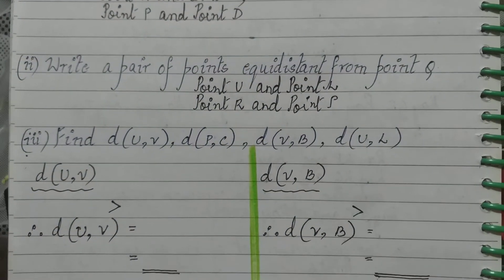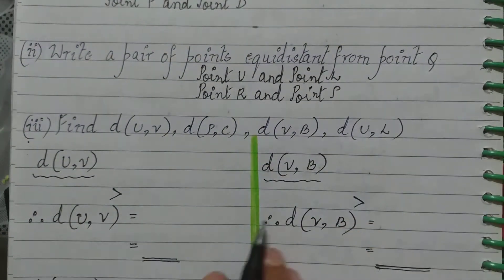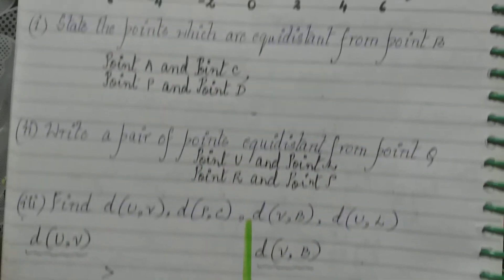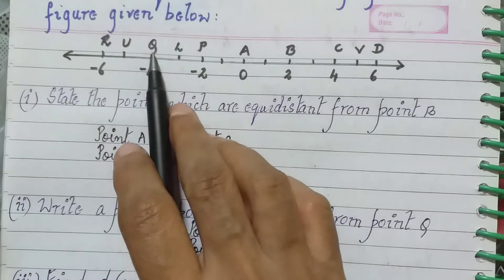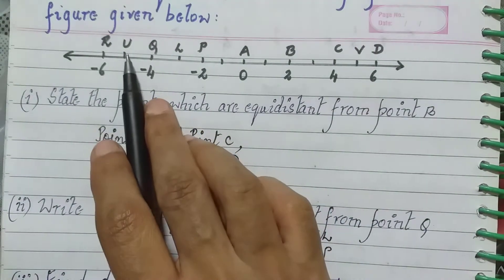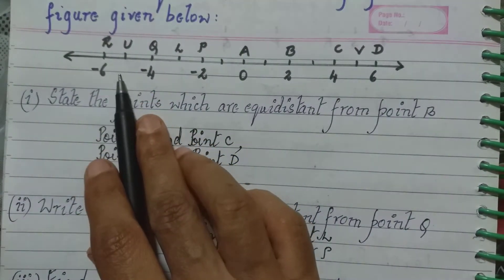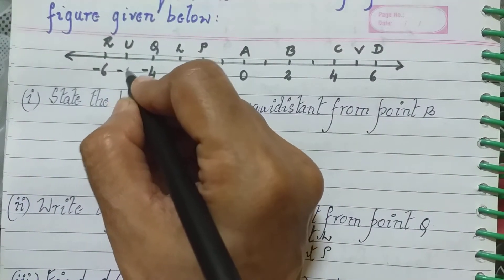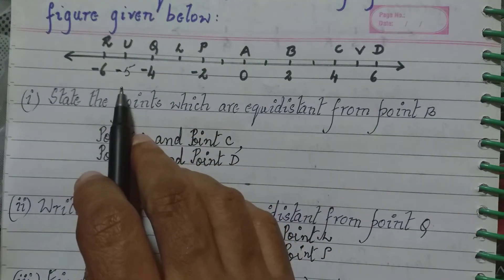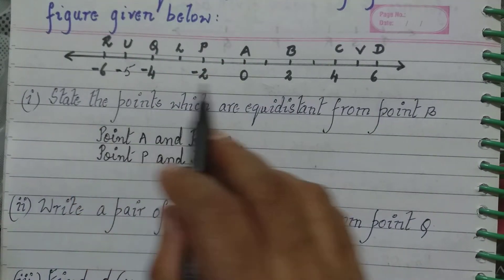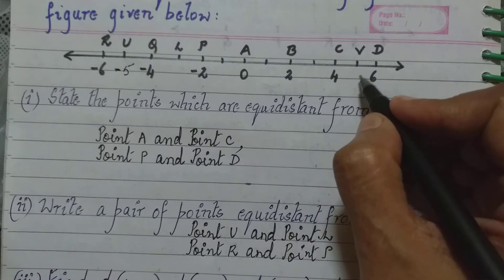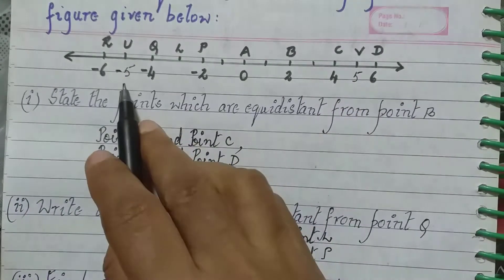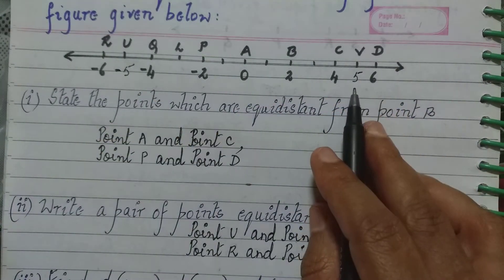The third sub-question asks us to find distances. First, find the distance between points U and V. We look at the coordinates: U is between minus 4 and minus 6, so it is minus 5. V is between 4 and 6, so it is 5. Therefore U is minus 5 and V is 5.